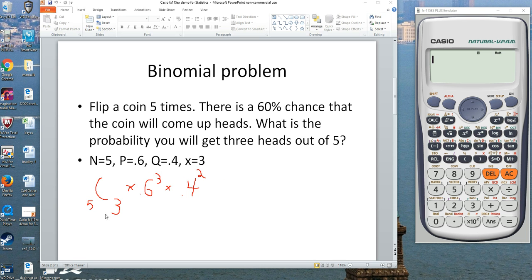This formula here is how you say it. We've been saying it in the math class. This is the binomial coefficient of the number of ways to pick three things out of five, multiplied by 0.6 to the third power, 0.4 to the second power.